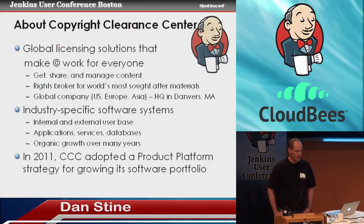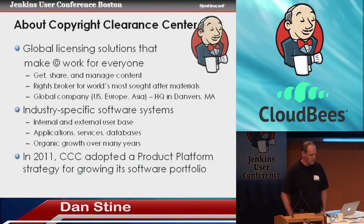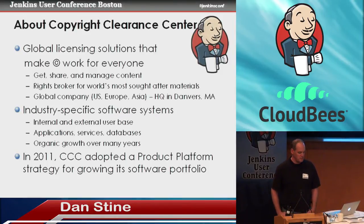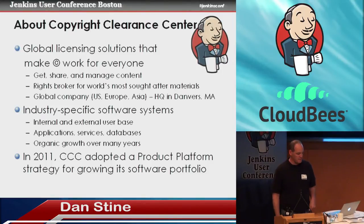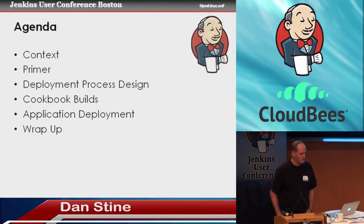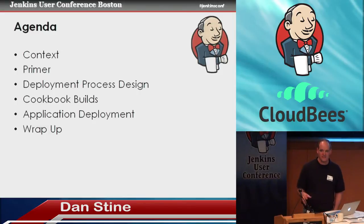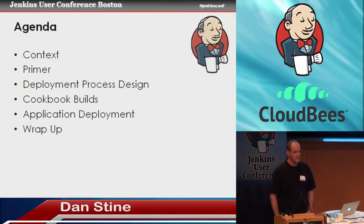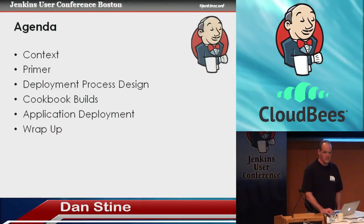Software is a huge enabler for us. We have the usual broad array of software systems that have grown up over the years, and three years ago we decided to adopt a product platform strategy to get our hands around the ever-increasing needs of the business — expanding product lines, larger volume of data — and really build a much smoother conveyor belt from development through to production. Quick agenda: we'll provide some context, do a quick introduction to some of the non-Jenkins technologies we used, and then get into the key elements of our deployment process design, our cookbook build process, and our application deployment process.